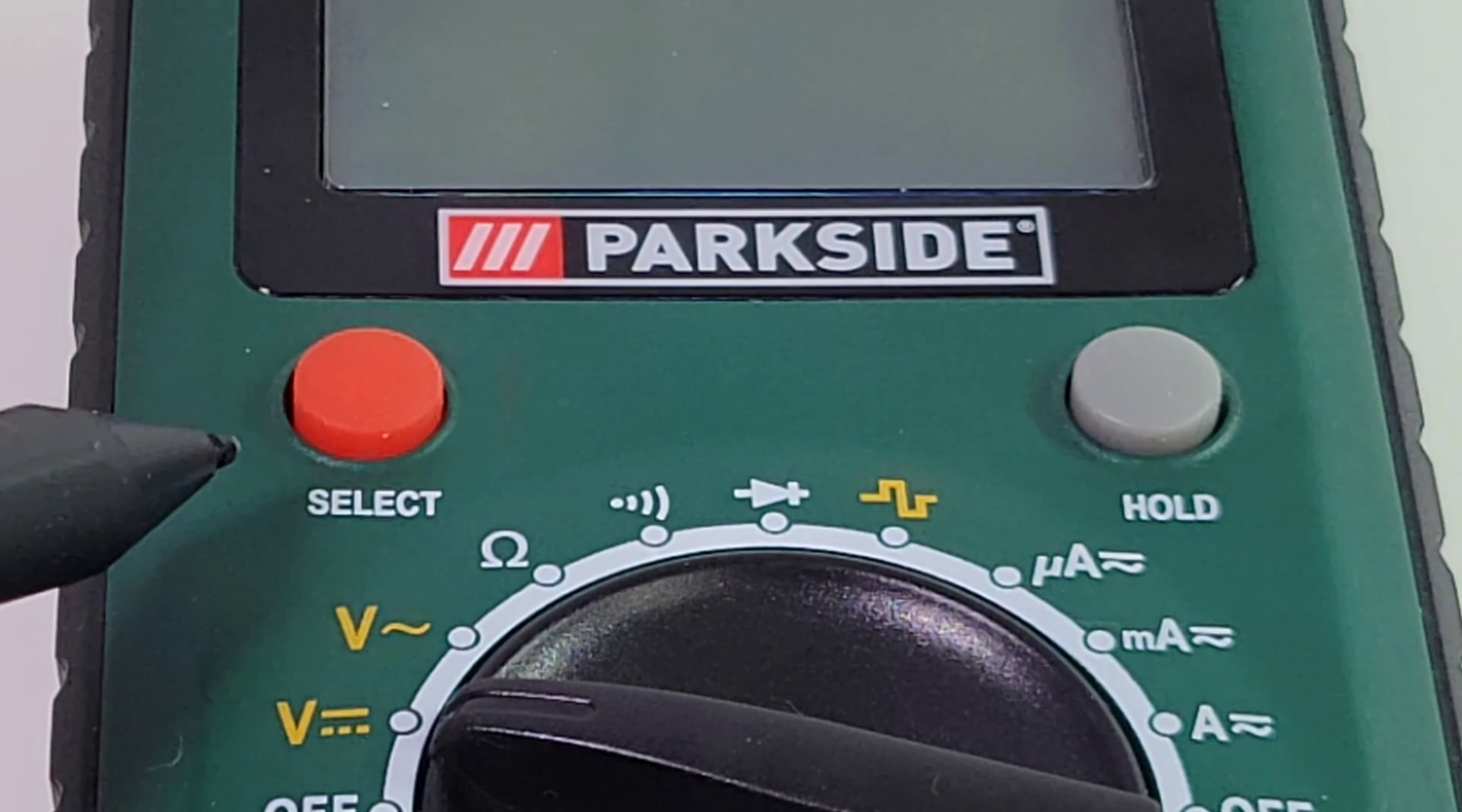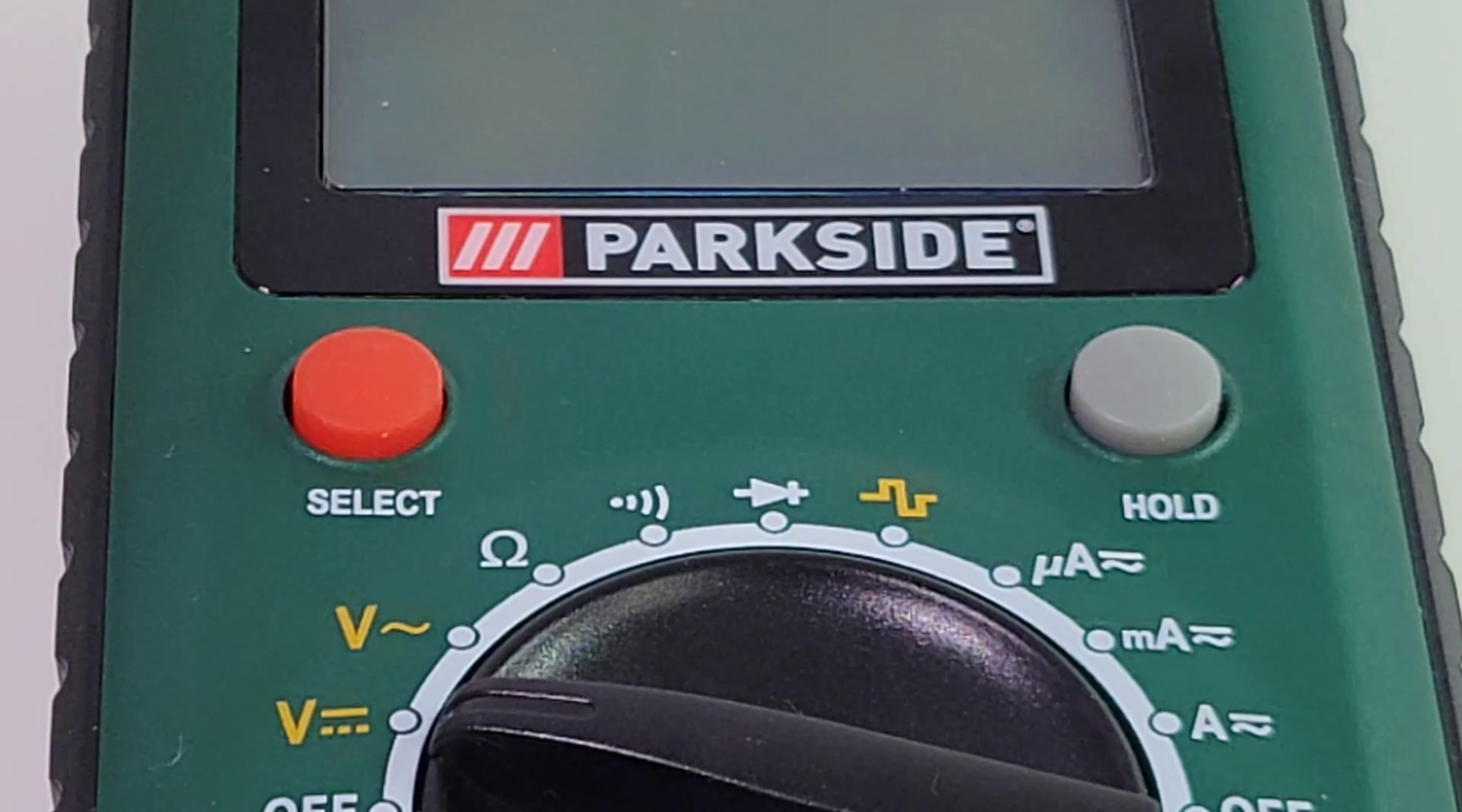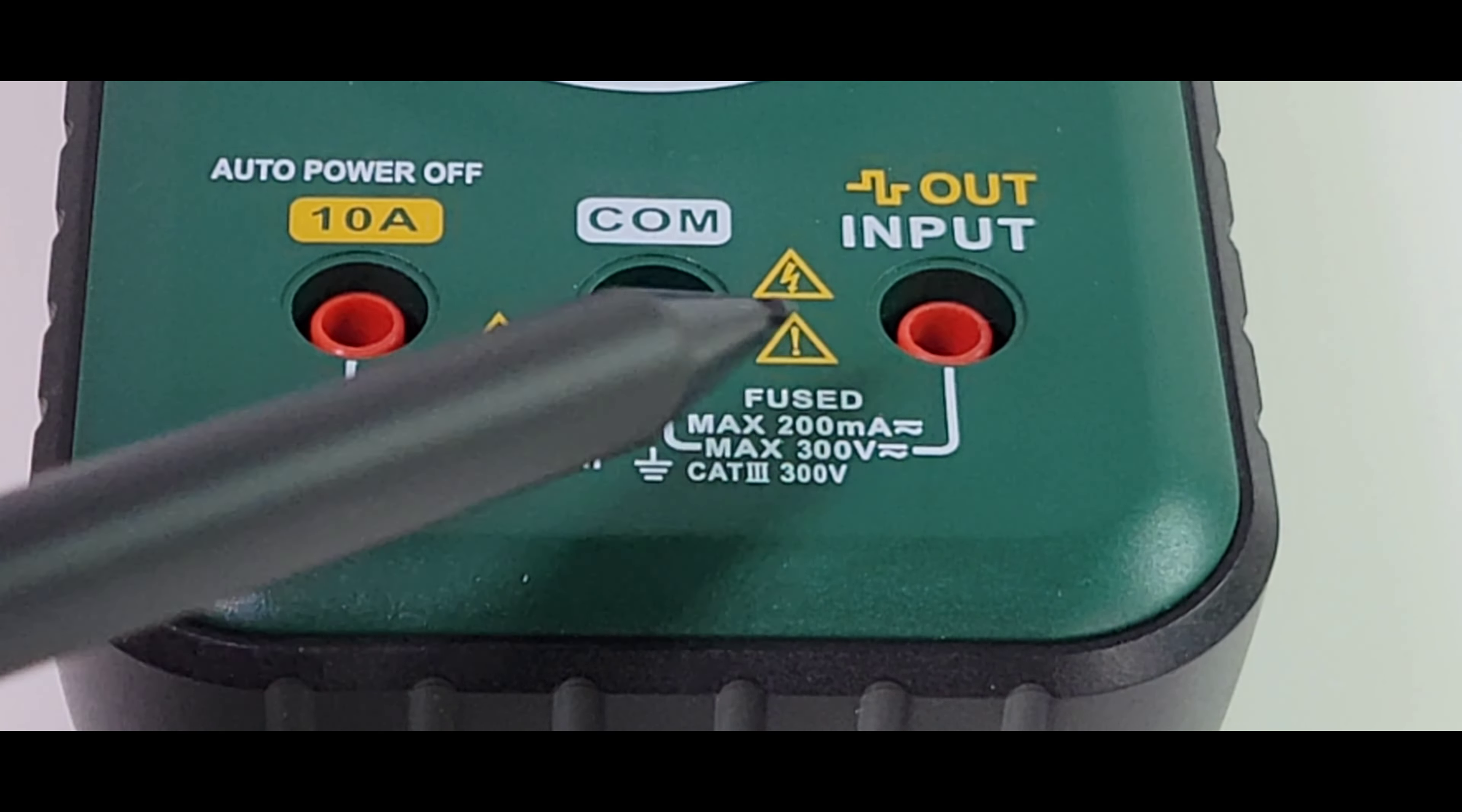On the far left we have our select button. Apparently this can also double as a data logger - there is some hack out there. On the far right we have our standard one touch hold. At the bottom left we have our high current 10 amp input, in the middle our common ground, and on the far right our signal out as well as the voltage, resistance, diode, continuity, and milliamps.